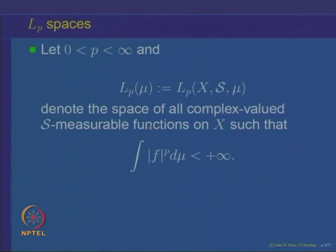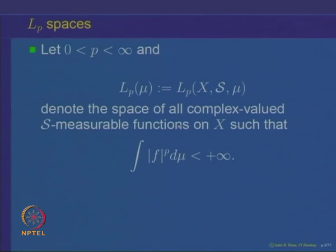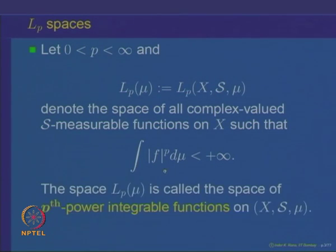This is a space of all complex-valued S-measurable functions on the space X such that the integral of the absolute value of the function F raised to power P d μ is finite. Recall in the previous lectures, we defined the notion of a complex-valued S-measurable function on X and we also defined the notion of its integral. If the integral of |F|^P d μ is finite, then we say the function F is P-th power integrable, and the collection of all P-th power integrable functions on the measure space (X, S, μ) is denoted by L_P(X, S, μ) or just L_P(μ).